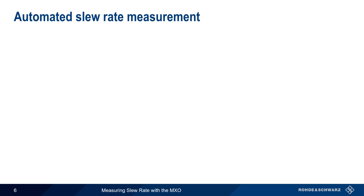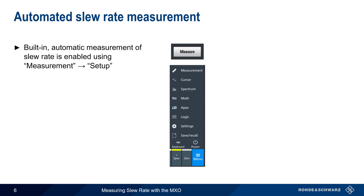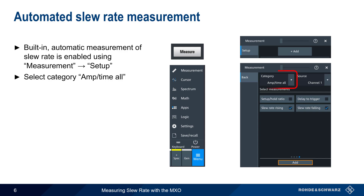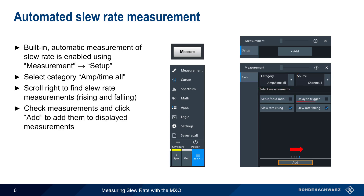A much easier way to measure slew rate is using the MXO's built-in automatic slew rate measurement, which can be started using the Measure hard key on the front of the MXO, or by selecting Measurement from the main MXO menu. Choose Add Measurement, and then under Category select Amplitude Over Time All. You may need to scroll right to find the slew rate measurement items. After checking these measurements, simply press Add at the bottom of the screen to have the MXO automatically calculate and display these values.